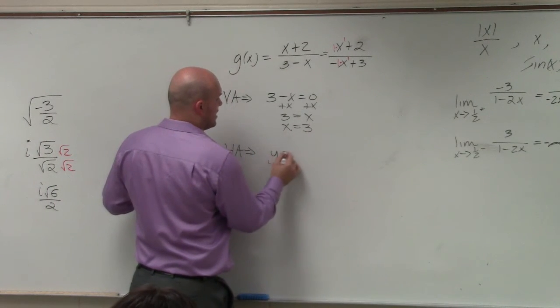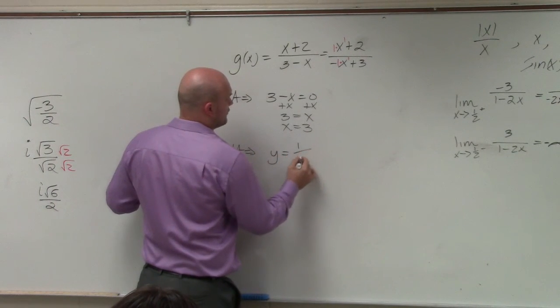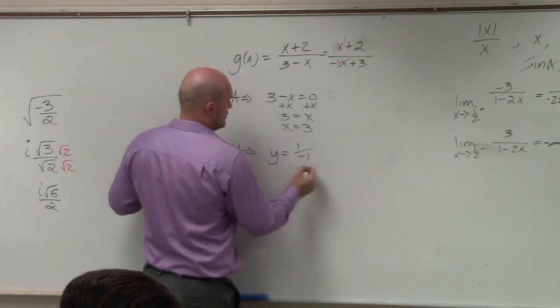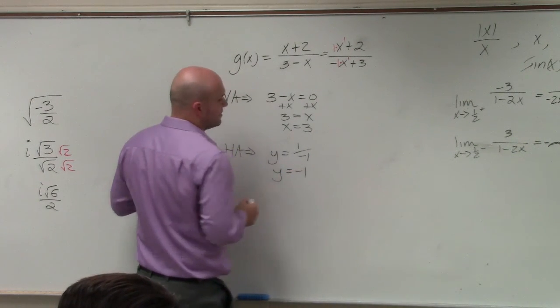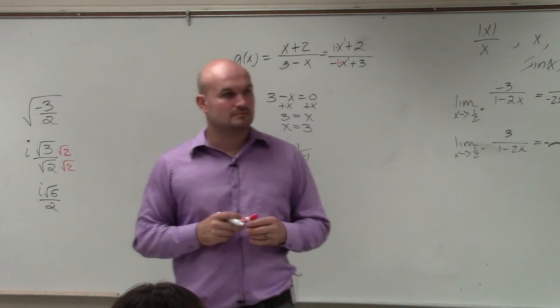Which we can see is one and negative one. So therefore, my horizontal asymptote is y equals one over negative one, which is just equal to y equals negative one. And that's it.